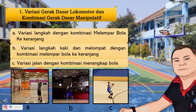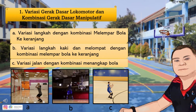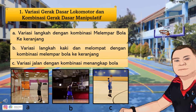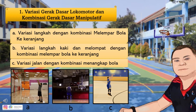Memasukkan bola ke keranjang lawan dan mempertahankan keranjang sendiri membutuhkan variasi dan kombinasi gerak. Berikut beberapa variasi dan kombinasi gerak dalam permainan bola basket. Yang A: variasi langkah dengan kombinasi melempar bola ke keranjang. Untuk memasukkan bola ke keranjang lawan, kamu harus melempar bola dengan penuh perhitungan. Melempar bola ke keranjang dapat diawali dengan berlari terlebih dahulu, baik berlari pelan maupun cepat sesuai kondisi permainan.